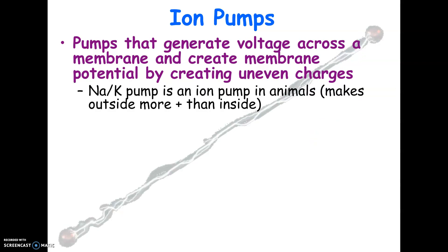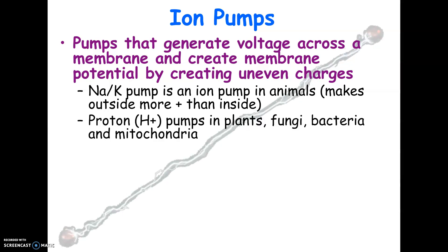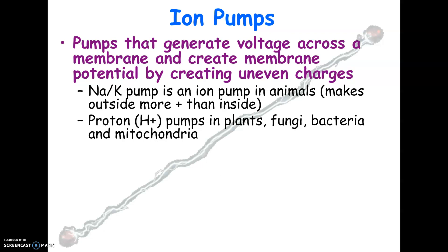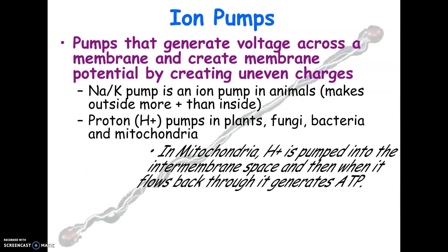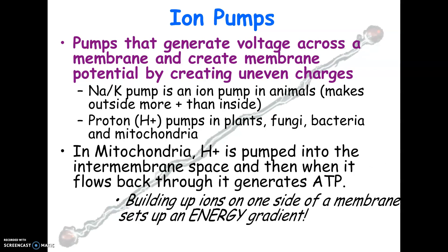Another example of an ion pump is the proton pump. It's called a proton pump because hydrogen has only one proton and one electron — if the electron leaves, hydrogen is nothing but a proton. Proton pumps are really important in plants, fungi, bacteria, mitochondria, and chloroplasts. In your mitochondria, which has a double membrane, the proton pump pumps hydrogen ions into the intermembrane space, setting up a gradient that ultimately generates most of your ATP.